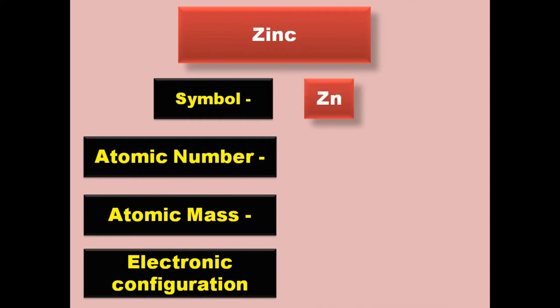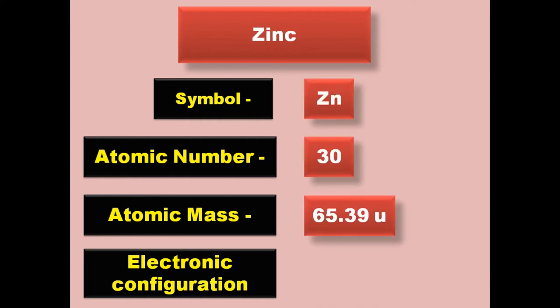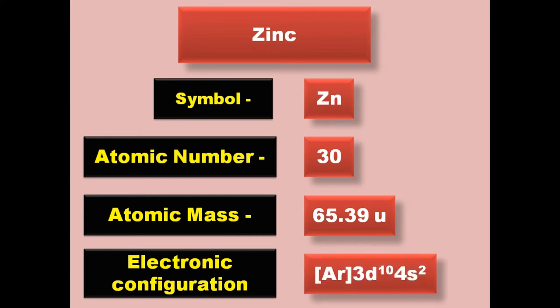Zinc has symbol Zn, atomic number 30, atomic mass 65.39, electronic configuration [Ar] 3d10 4s2. Zinc is a transition metal and exists in solid form at room temperature.